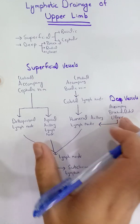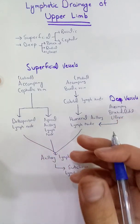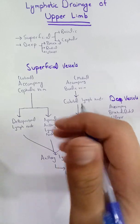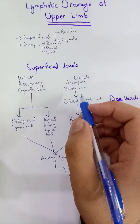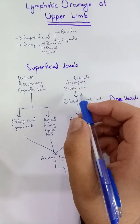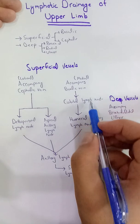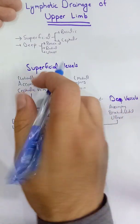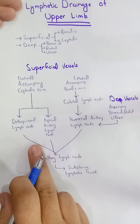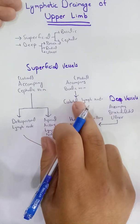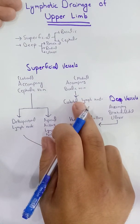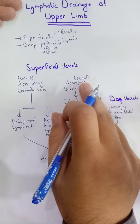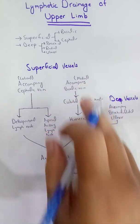We can also use this to solve clinical scenarios. For example, if there is an infection on the medial side of the hand, it will spread to the cubital fossa lymph nodes first. If the infection is on the lateral side, it will move directly to the axilla. So if infection is found in the cubital fossa, we can assume the infection originated on the medial side of the hand.